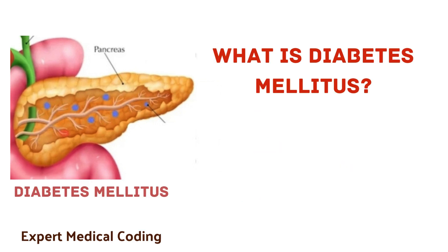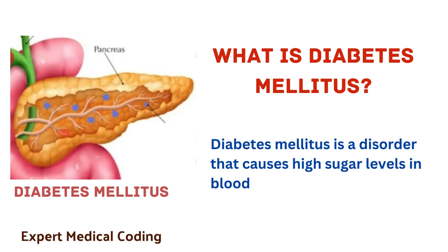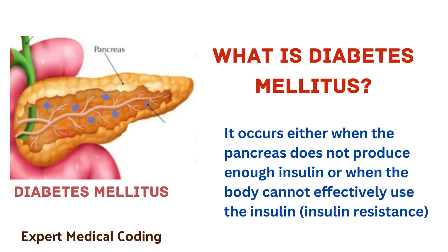What is diabetes mellitus? Diabetes mellitus is a disorder that causes high sugar levels in blood. It occurs either when the pancreas does not produce enough insulin or when the body cannot effectively use the insulin, called as insulin resistance.